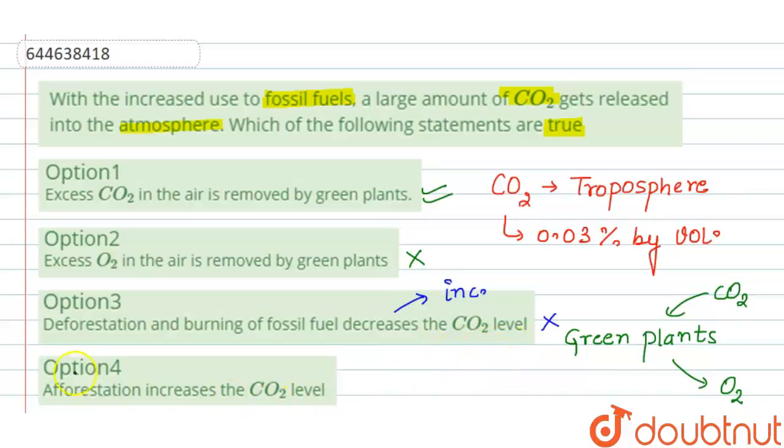So now the fourth one, that deforestation increases the CO2 level. So it is also incorrect because more the number of green plants will be there, more absorption of carbon dioxide from the atmosphere. So this afforestation will decrease the CO2 level. So it is incorrect.